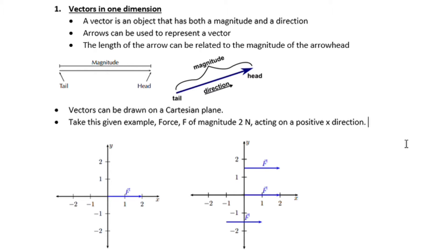Hi there, welcome back. Let us look at vectors in one dimension. This will be the introduction. We can define a vector as an object that has both magnitude and direction.